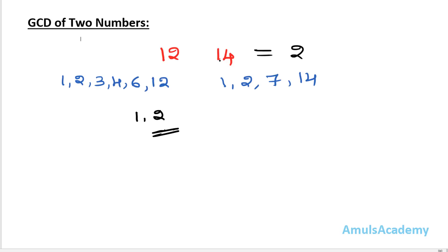But if you take bigger numbers then it is not easy to find the divisors manually. So instead of this method we can use Euclid's algorithm to find the GCD of two numbers. Euclid was a mathematician who gave an algorithm to find the GCD of two numbers.